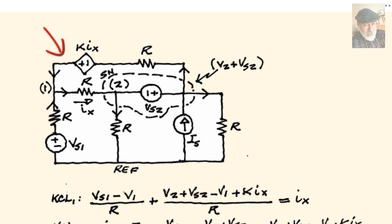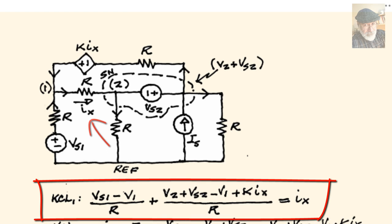Minus V1, plus the value of the dependent source KIX divided by the resistance in the branch, R. And on the far side, leaving the node is IX. That is KCL for node 1.